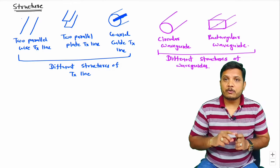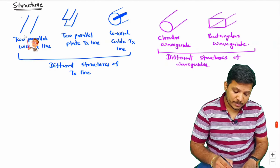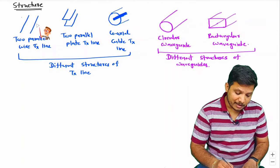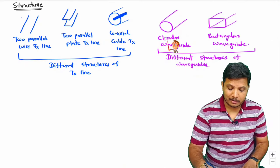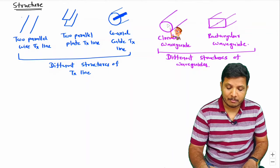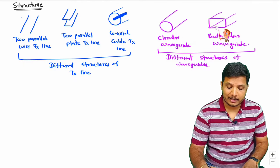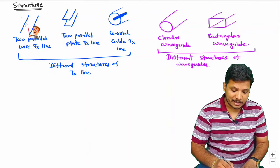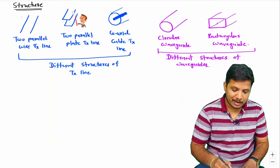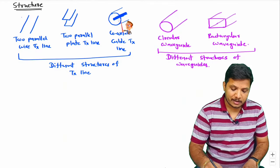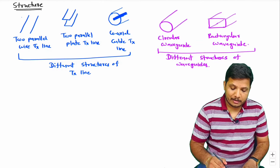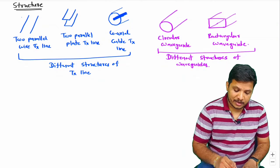If you observe the structures, you can clearly see that in transmission line we need lesser metal compared to waveguide, as in waveguide we need a complete metallic tube — circular or rectangular — while in transmission line it can be two parallel wires, two parallel strips, or a coaxial cable.